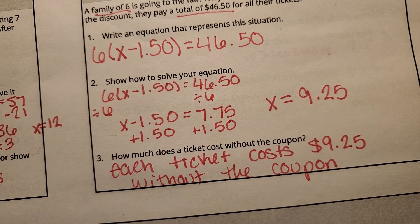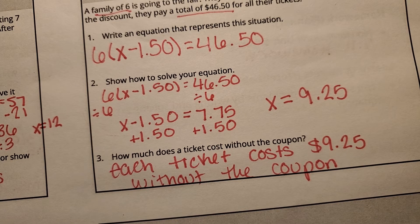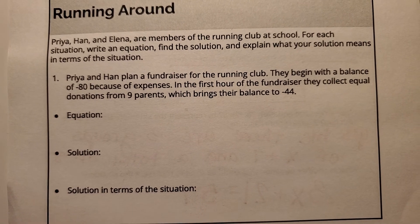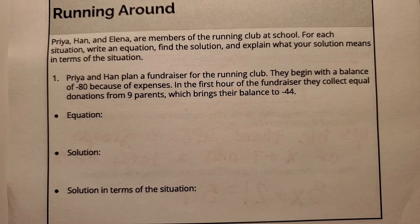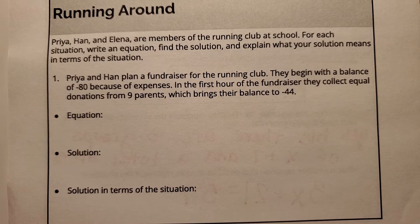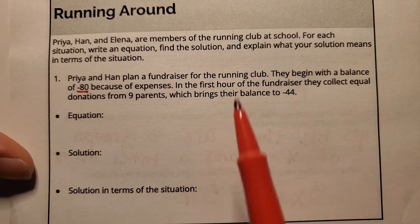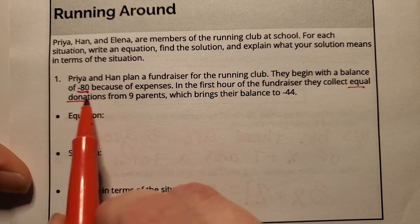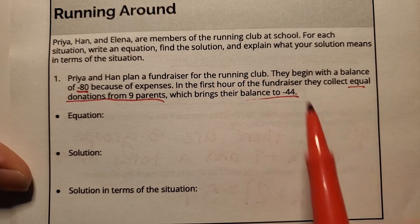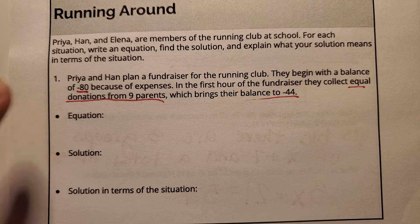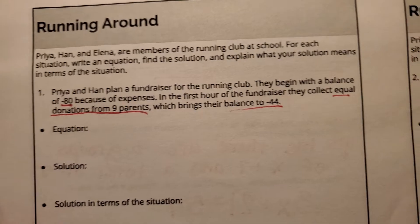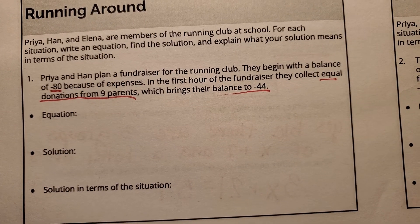Great job — we're done with 'At the Fair.' Our next task is 'Running Around,' about a running club. Priya, Han, and Elena are members of the running club at school. For each situation, we'll write an equation, find the solution, and explain what the solution means. For our first situation: Priya and Han plan a fundraiser. They begin with a balance of negative $80 because of expenses. In the first hour, they collect equal donations from nine parents, bringing their balance to negative $44. Write an equation, find the solution, and explain what it means. Pause and check your answers.